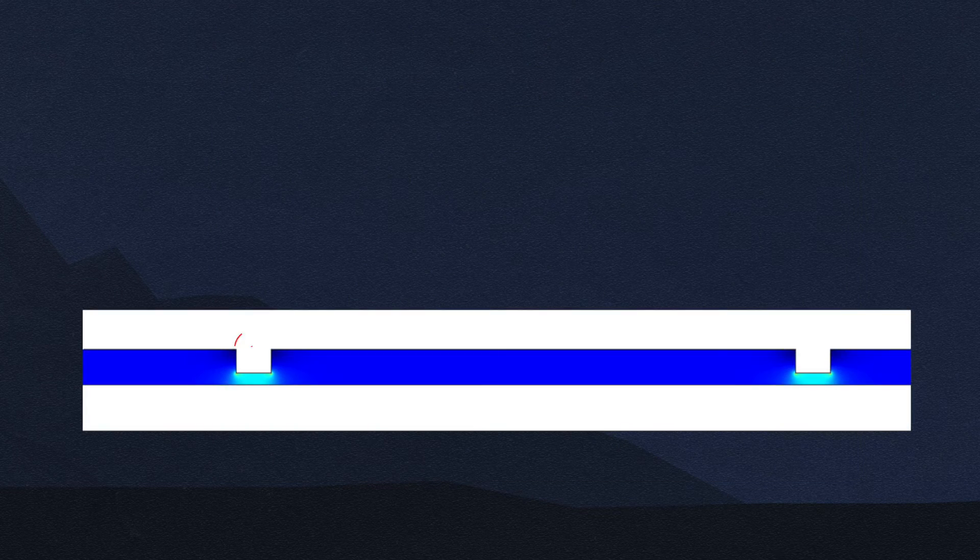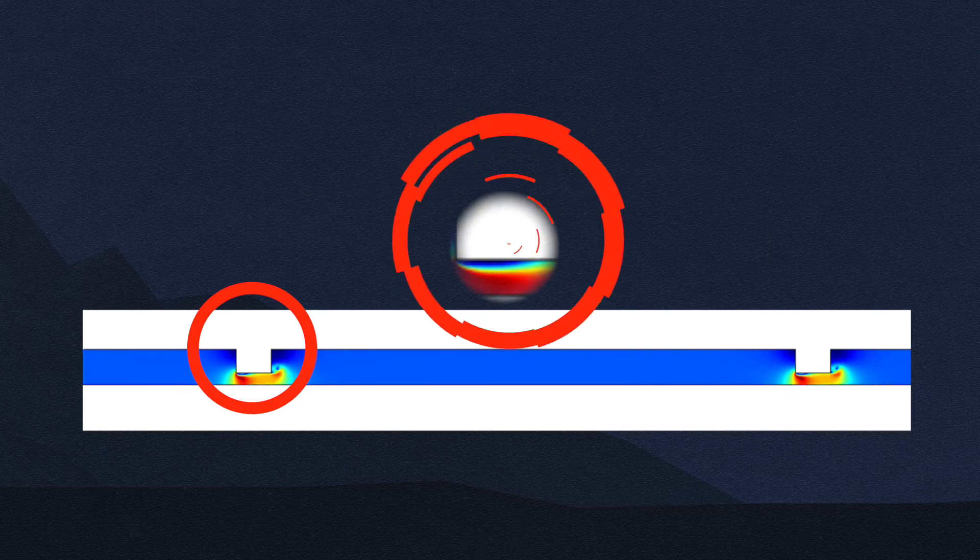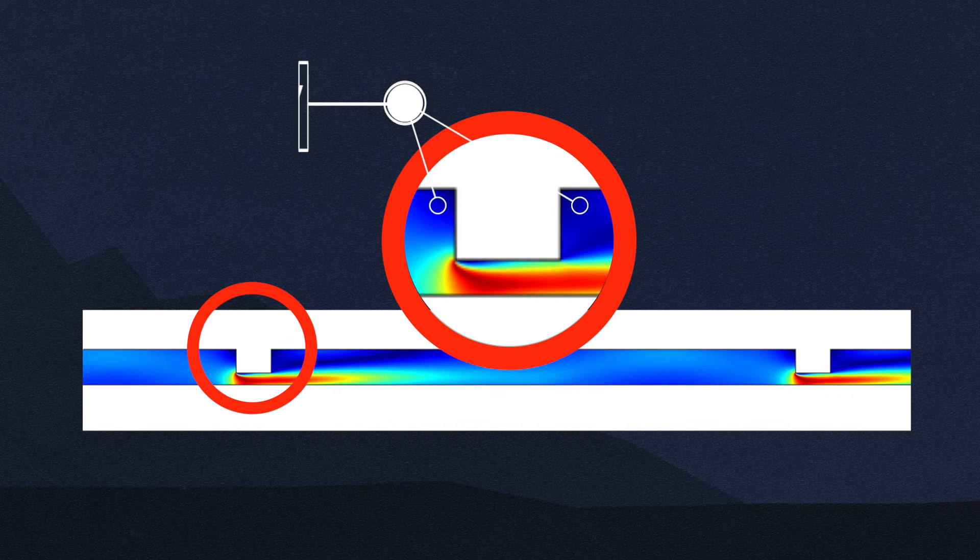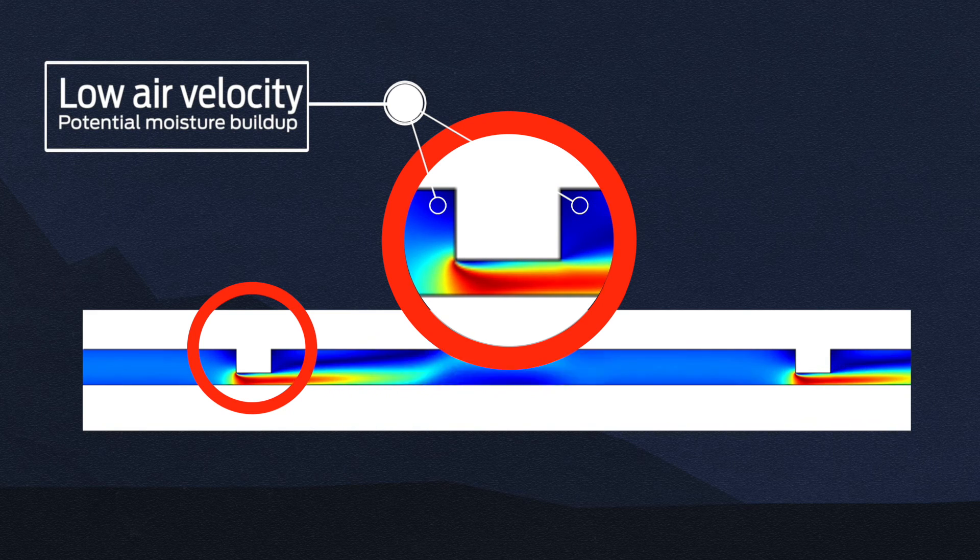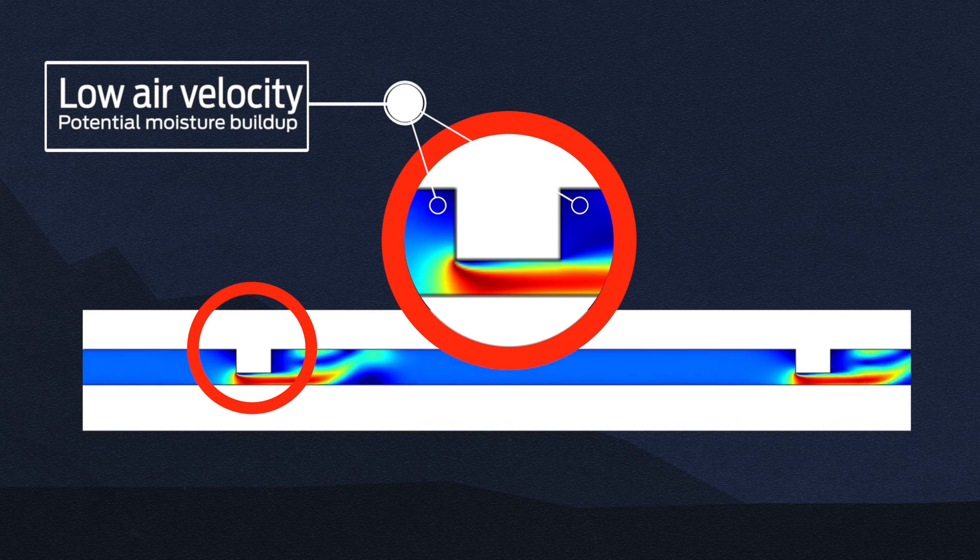Modeling the airflow pattern around the purlins identifies an area of low air velocity and therefore the potential of moisture buildup in front and behind the purlin near the underlay.